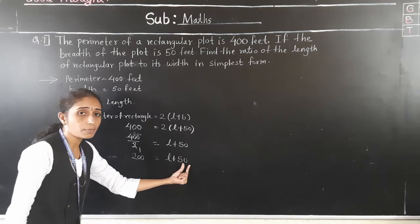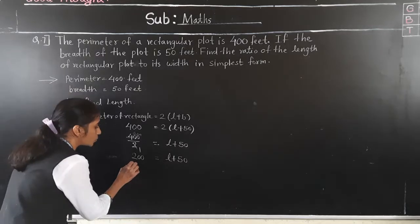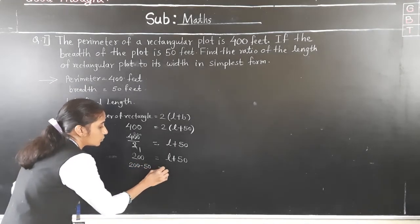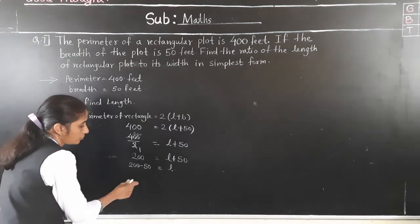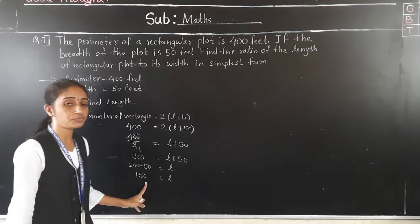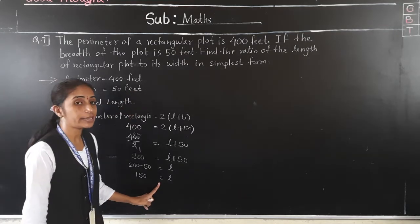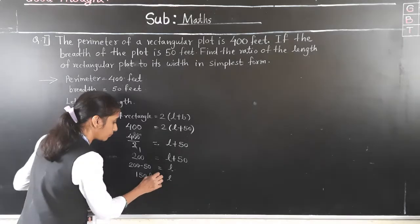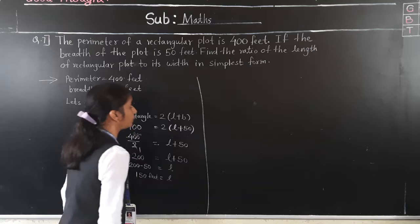Transfer 50 to the other side — it becomes minus. So 200 minus 50 feet equals length. 200 minus 50 is 150. So the length is 150 feet.